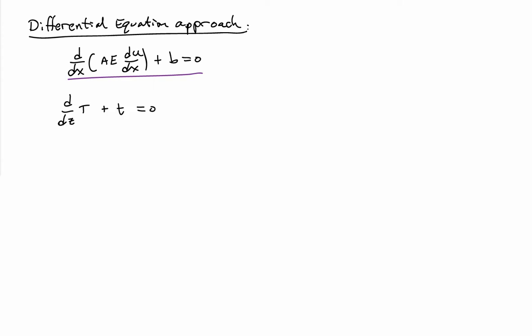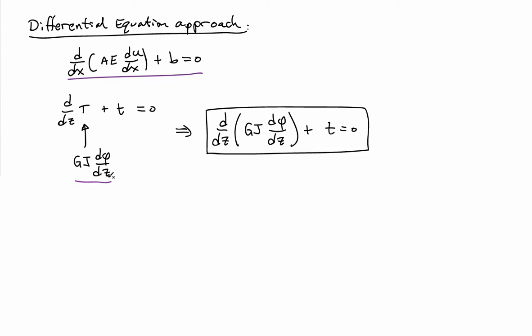Let's start with the equilibrium equation, which says dT/dz plus little t equals 0. So capital T is internal torque on any section cut, and little t is any distributed torque along the length of the bar. I can replace capital T by GJ dφ/dz. You'll recall that the internal torque is GJ dφ/dz for a homogeneous elastic system.